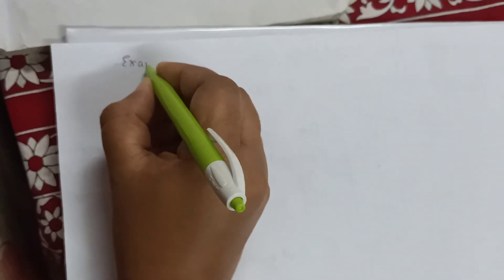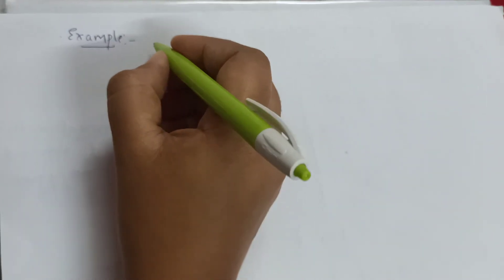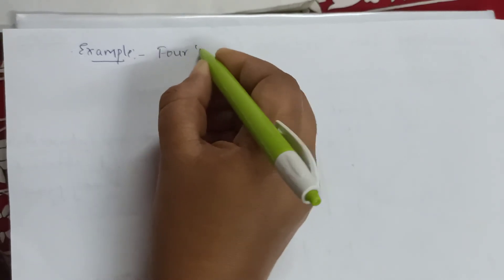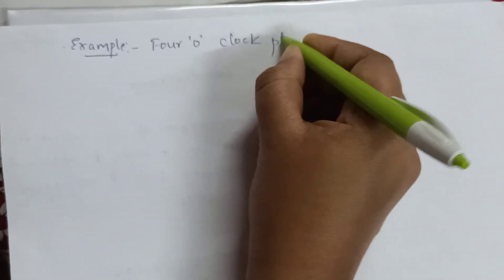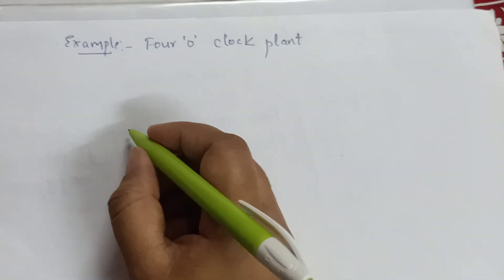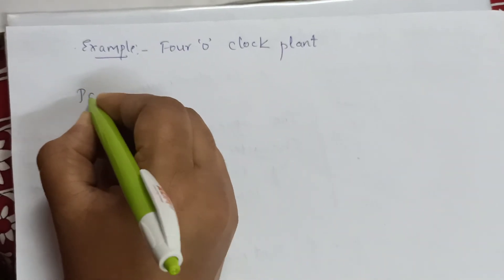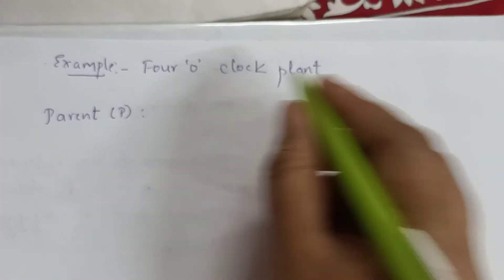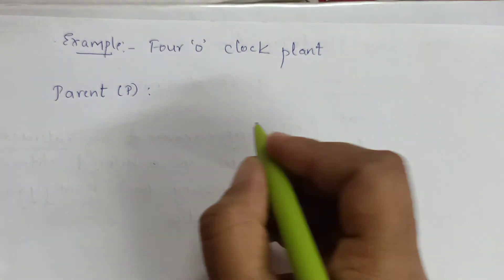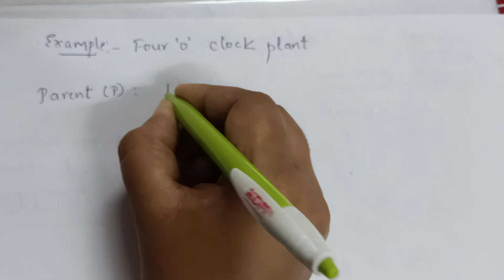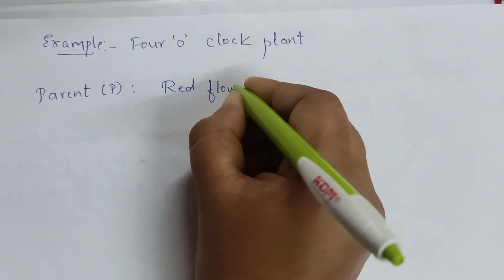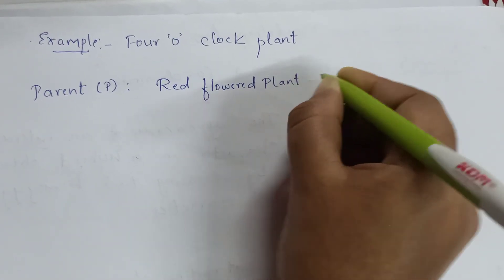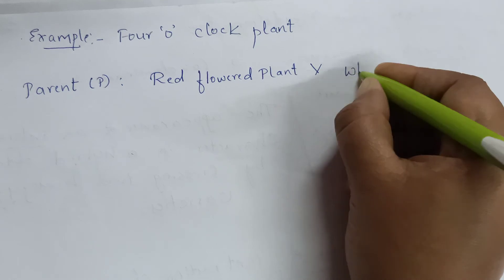The example is not so difficult — it is very easy, same as a monohybrid cross. Let me take the four o'clock plant as an example. You can write any of the examples mentioned earlier. First I'll write the parent. When it comes to the four o'clock plant, that plant gives red flowers as well as white flowers.